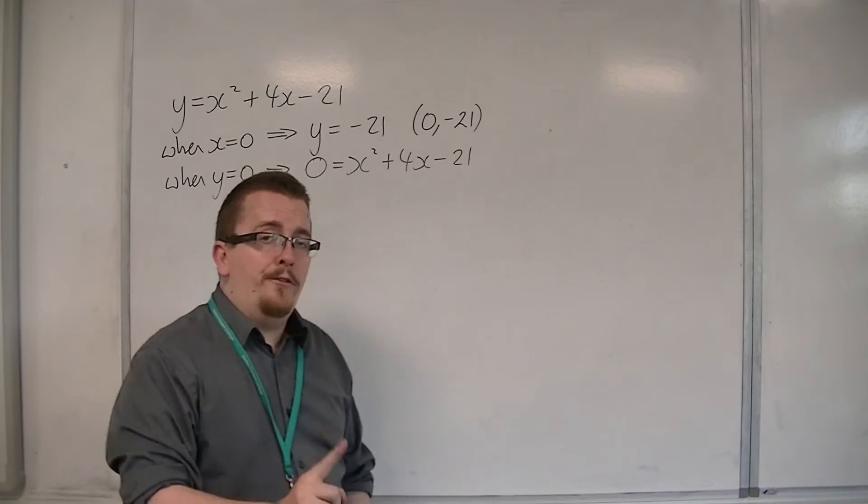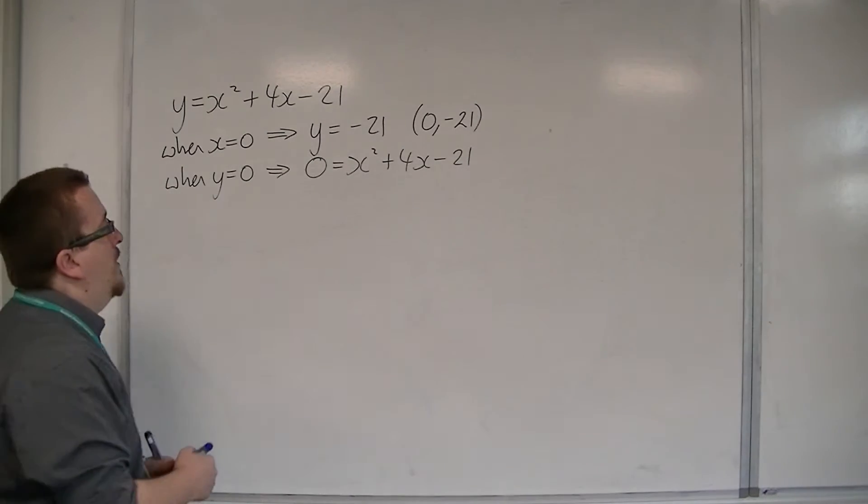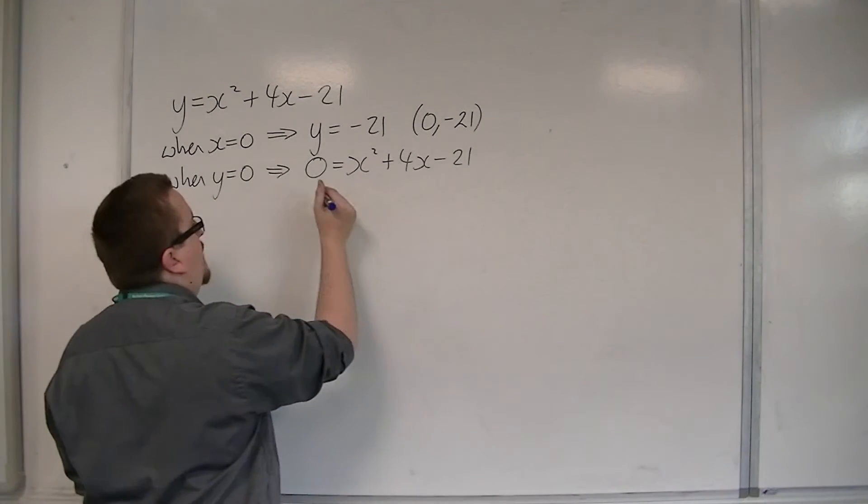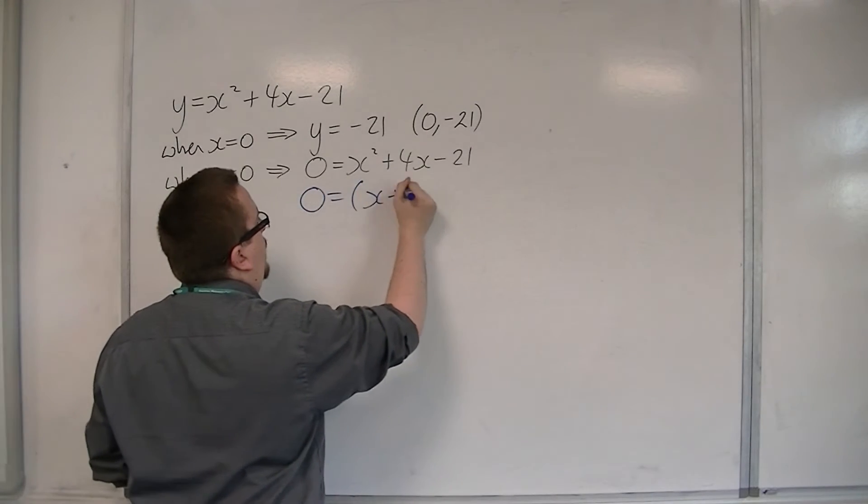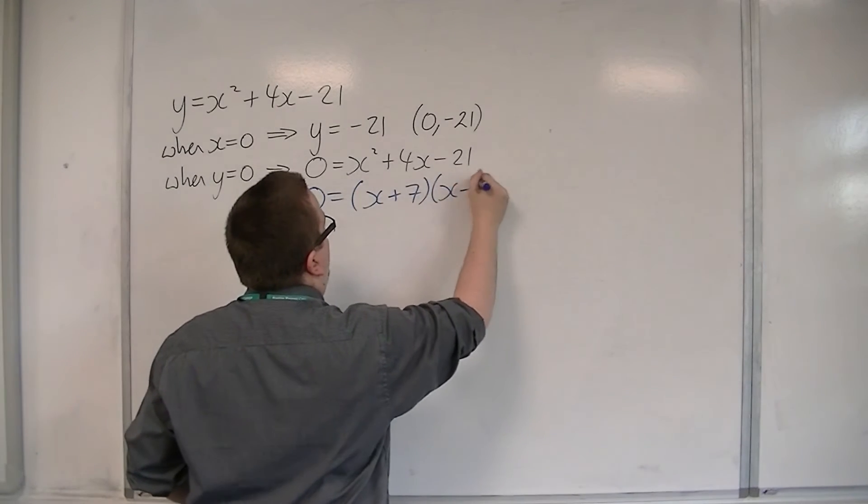But I do know how to factorize. So this equation can be factorized, and it would be x plus 7 times x minus 3.